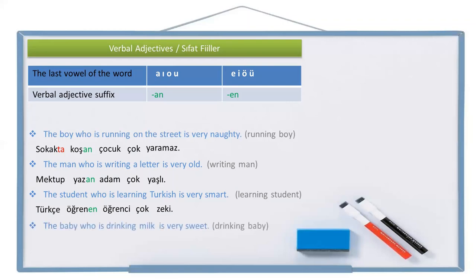And the last example for this suffix: the baby — but which baby — who is drinking. Baby is bebek. The verb is drink — iç, and with the suffix: içen bebek. Drinking what? Milk — süt. The baby who is drinking milk: süt içen bebek. He is very sweet — çok tatlı.